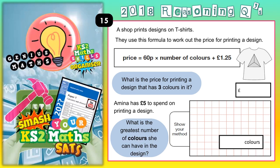Welcome Satsbusters to question 15. A shop is printing designs on t-shirts. They use this formula to work out the price of printing a design. The price is 60p times the number of colours plus £1.25. You always have to add on the £1.25 no matter how many colours you're using.